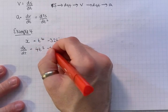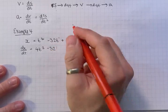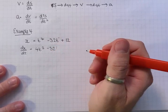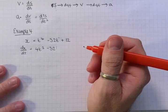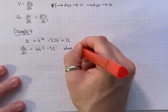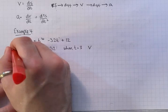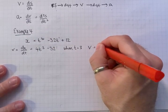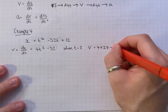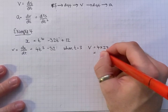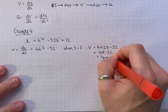The power of 1 times by the power, reduce the power by 1: t to the 0, which is 1. So it just goes to minus 32. And when you differentiate any number, it goes to 0. And it wanted the velocity when t equals 3. So when t equals 3, the velocity is going to be 4 times 3 cubed is 27, minus 32. So 108 minus 32, which is 76 meters per second.